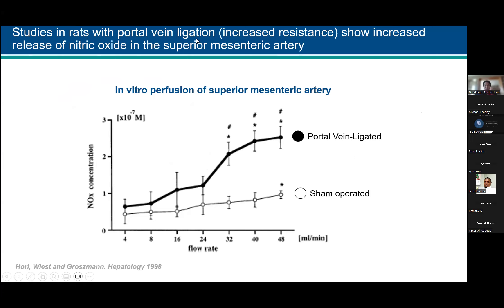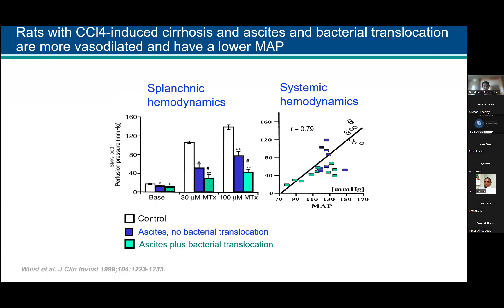My mentor Roberto Grossman had studies demonstrating this hyperdynamic circulatory state, first in rats with portal vein ligation — the livers are normal but there's an increase in resistance and portal hypertension. Looking at portal vein ligated versus sham-operated animals, the flow rate and NO concentration increased more in the portal vein-ligated group. This perfusion of the superior mesenteric artery showed they were much more hyperdynamic, with more vasodilation and higher perfusion.